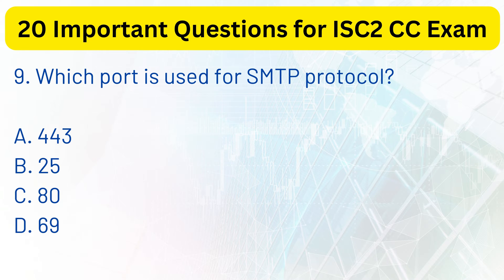Explanation. Port 25 is used for the SMTP protocol, while port 80 is used for HTTP, port 443 is used for HTTPS, and port 69 is used for TFTP.